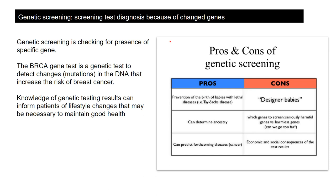Genetic screening is testing for the presence of a particular gene - it could be a specific gene that causes a disease. One example is the BRCA gene test, which is a test to detect changes in the DNA that may lead to an increased risk of breast cancer. If you're positive for this genetic test, it doesn't mean that you're going to develop breast cancer, but it might put you into a higher risk category and you may decide to change your lifestyle based on that information.